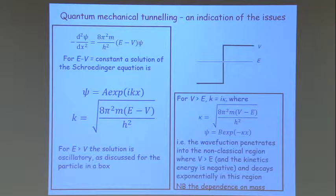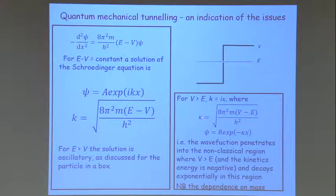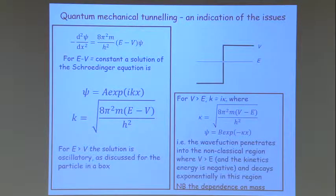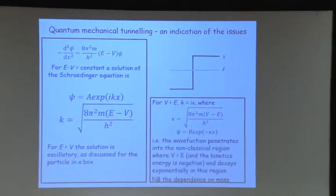What happens on the other side where V is greater than E? This quantity is now negative, and we can't take its square root except as an imaginary number. We define a quantity kappa, where kappa equals i times K, so psi equals B times the exponential of minus kappa x — an exponentially decaying function. On one side we have an oscillatory function; on the other, an exponentially decaying function. Since psi squared is the probability density, this means the particle can get out into the region of negative kinetic energy — the non-classical region.